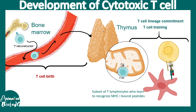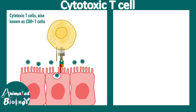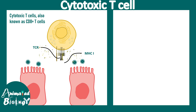Even after becoming CD8 positive cytotoxic T cells, they are still naive — they hold the degree but have no job experience. These cytotoxic T cells become activated when they recognize viral particles or tumor antigens on class 1 MHC molecules. After this interaction, the cells produce large quantities of granules containing granzymes and perforin, which kill the target cell.